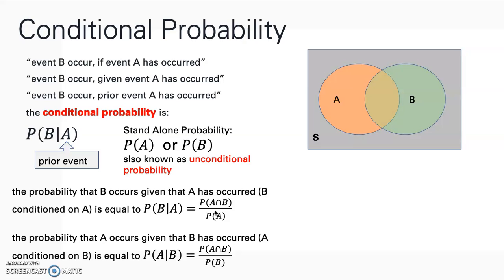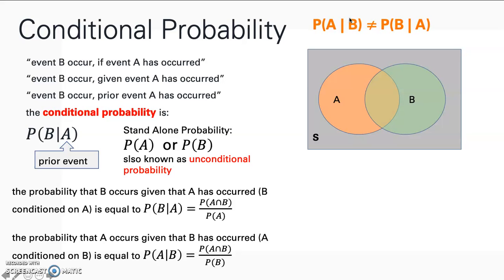If B is the prior event, then the probability of event A given event B has occurred is written accordingly. It is important that we write the event that has already occurred after the vertical bar. So P(A|B) means A after B has occurred, and P(B|A) means B after A has occurred. These two conditional events are not the same, which is why we must pay attention to what is written after the vertical bar.